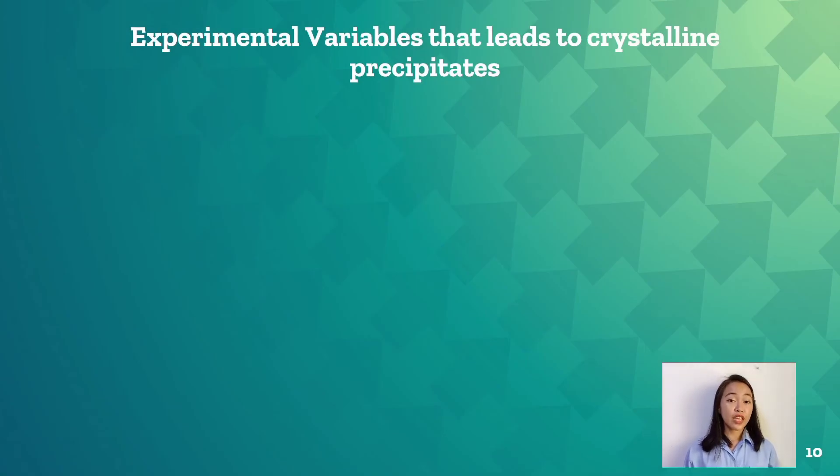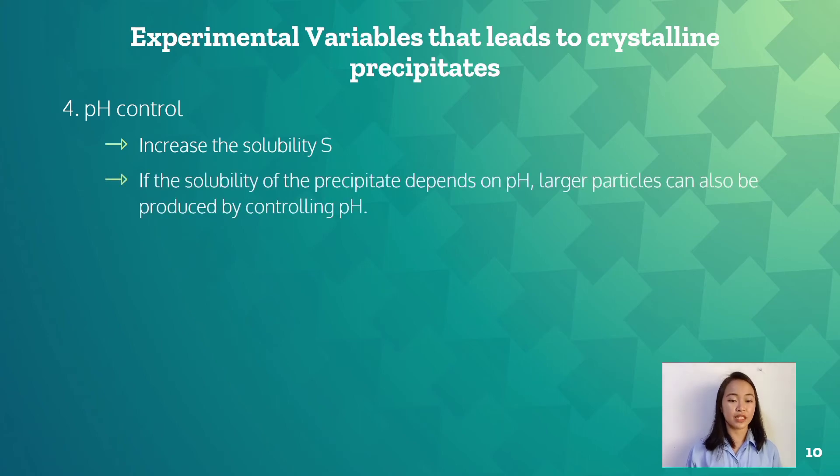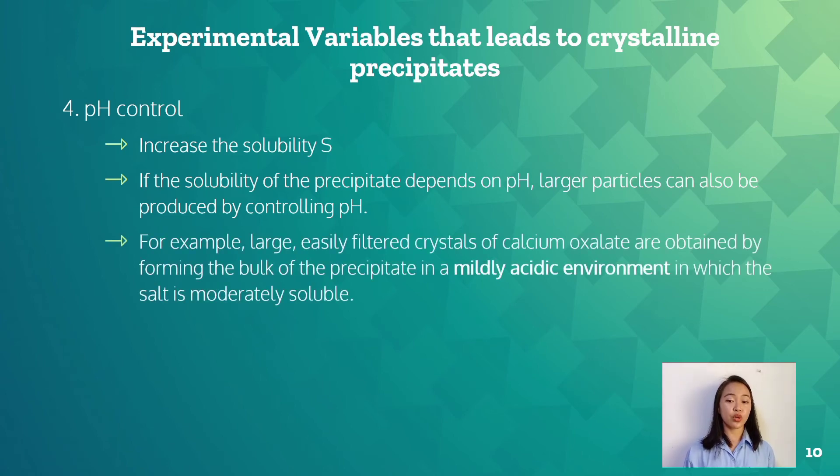And the last experimental variable that leads to crystalline precipitates is the pH control, which is done to increase the solubility. If the solubility of the precipitate depends on pH, larger particles can also be produced by controlling pH. For example: